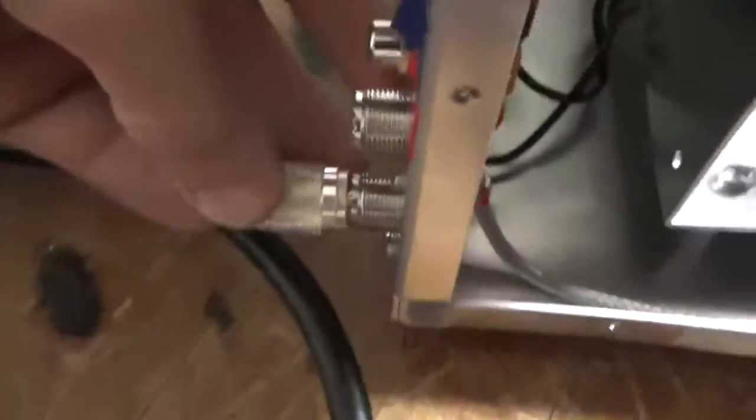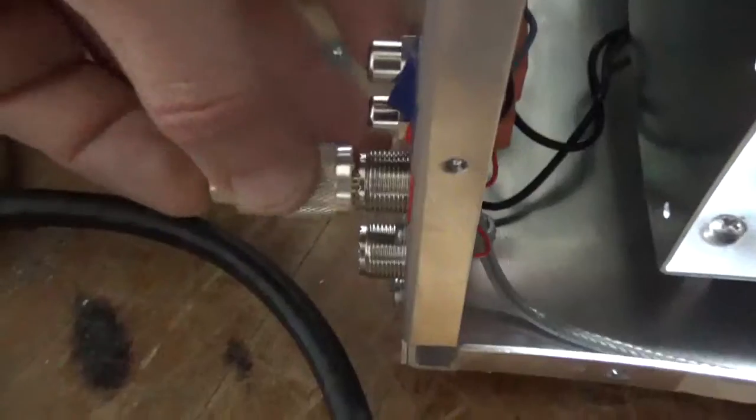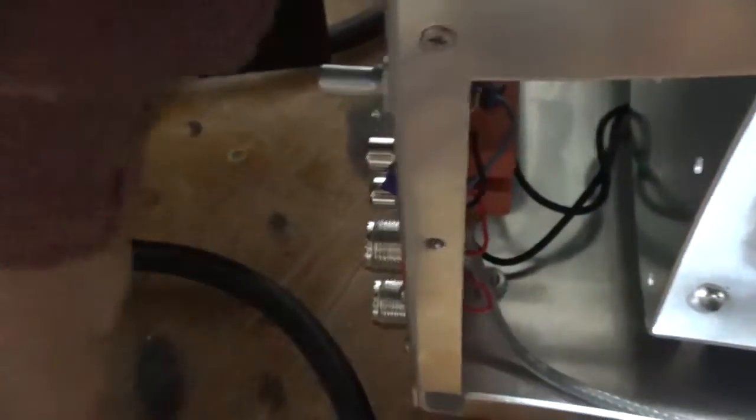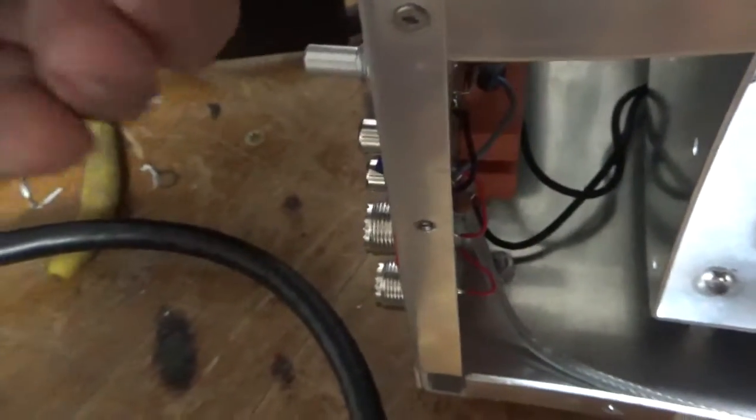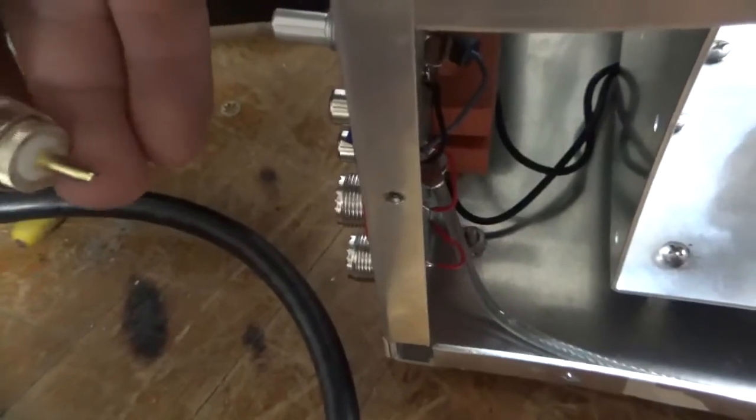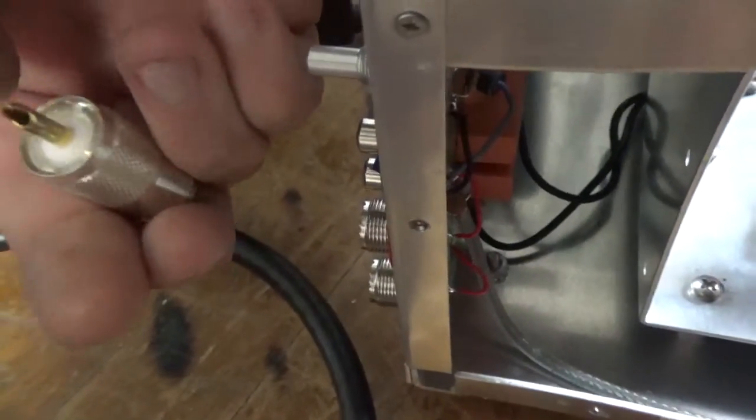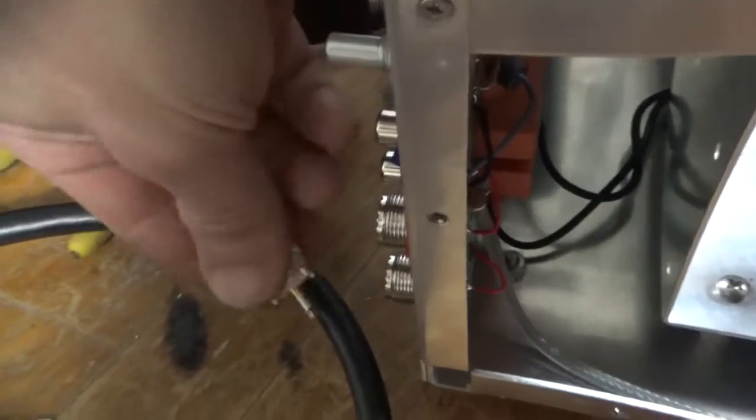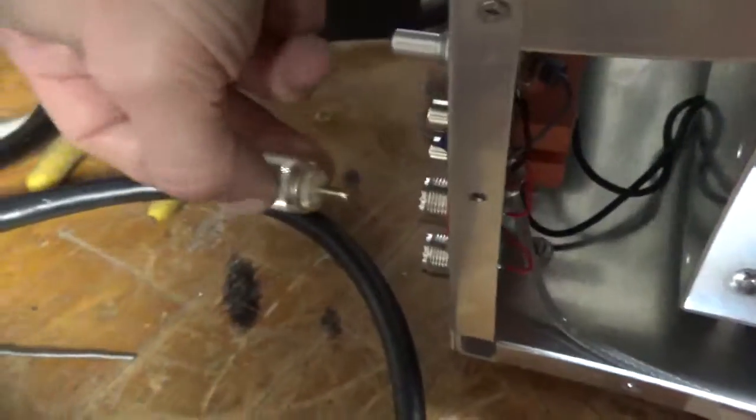His SO239s, always check these. The input one has no grip, the output one has a little bit of grip. So you always want to check your center pin on your PL259 when you go to solder it. Sometimes you can leave a glob, and it'll actually spread the clips. His are okay.